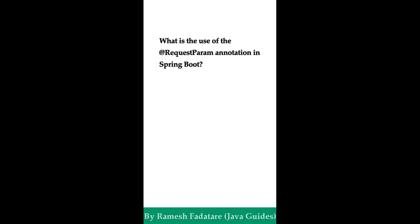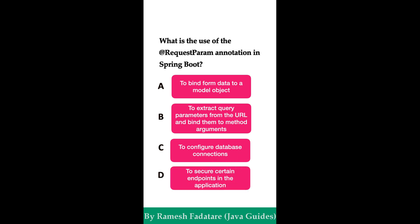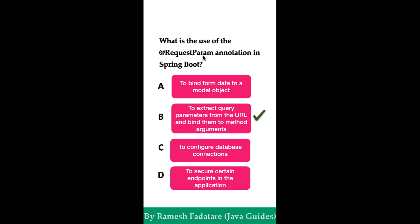What is the use of @RequestParam annotation in Spring Boot? Option A: to bind form data to a model object. Option B: to extract query parameters from the URL and bind them to method parameters. Option C: to configure database connections. Option D: to secure certain endpoints in the application. The correct answer is option B. The @RequestParam annotation in Spring Boot is used to bind query parameters from the URL to method parameters in the controller, allowing you to access request parameters for processing, useful for handling form submissions or filtering data.